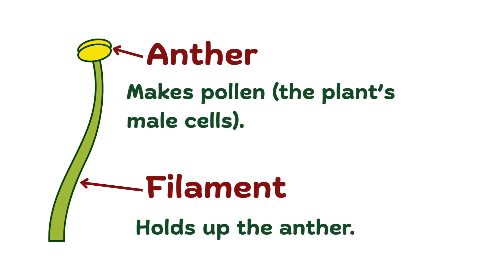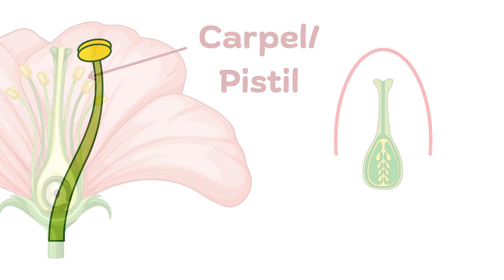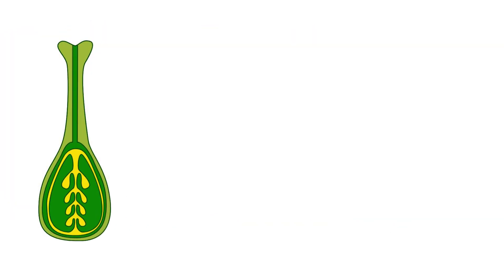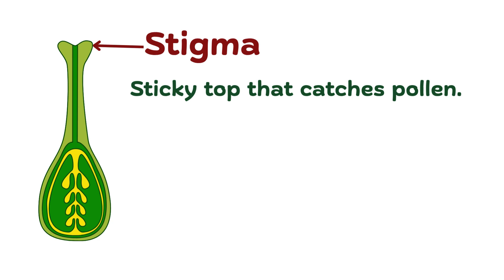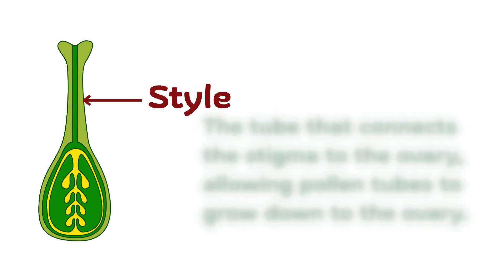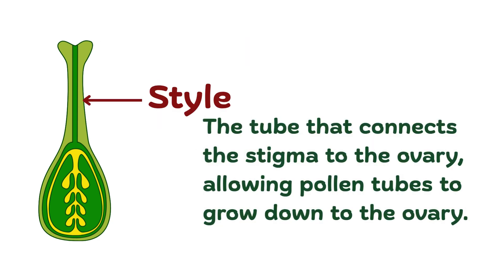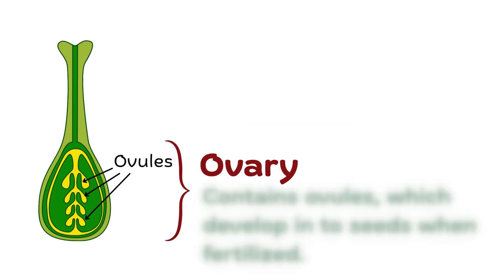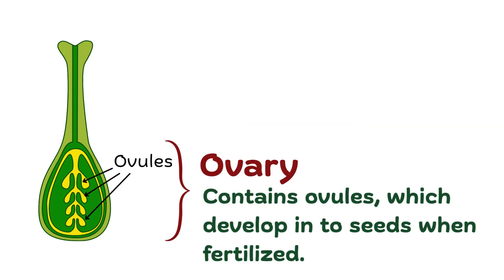The female part is called the carpel or pistil. It includes the stigma — the sticky top that catches pollen — the style, the tube that connects the stigma to the ovary, allowing pollen tubes to grow down to the ovary. The ovary contains ovules, which, after pollination, turn into seeds.